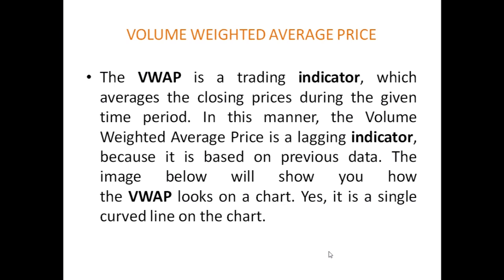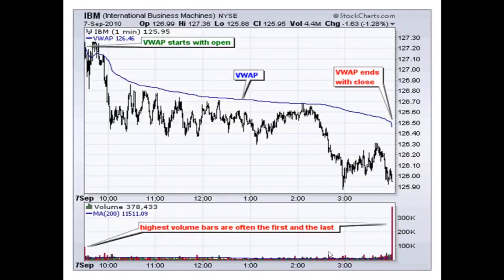The image below shows how the Volume Weighted Average Price looks on the chart. It is a single curved line. You can see the blue line here is the Volume Weighted Average Price shown on the IBM chart.